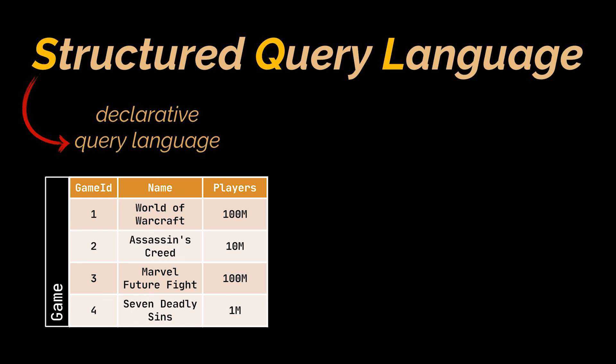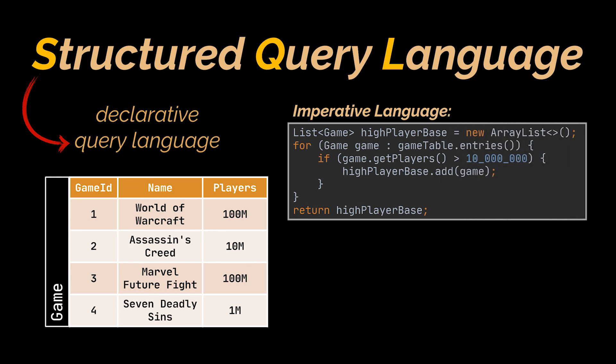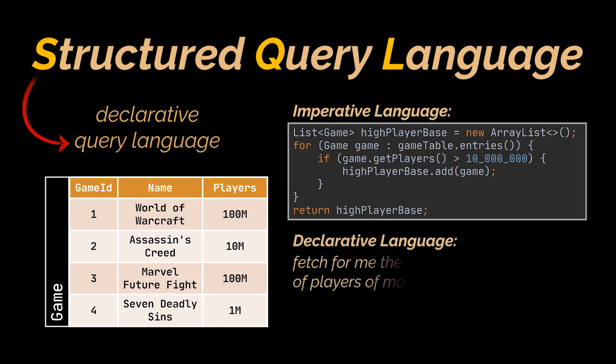In an imperative language, I would write something like: for each game in the game table, check if its number of players is bigger than 10 million, and if true, add it to an array which I will later return to the user. Whereas in a declarative language, I would write something like 'fetch for me the games having a number of players of more than 10 million.'